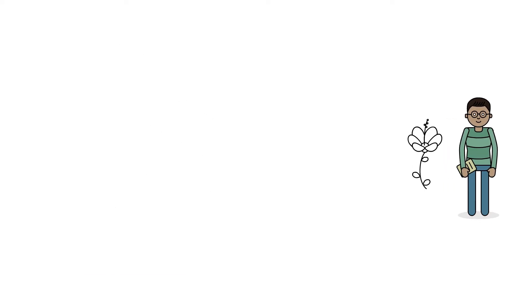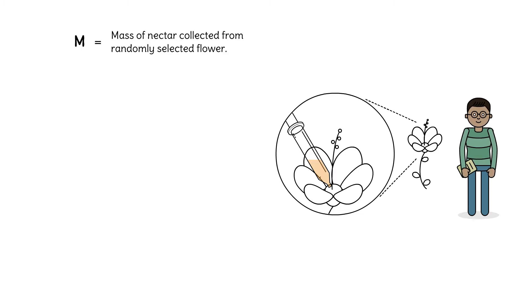The next day, Booker decides to measure the mass of the nectar in the flowers he encounters. He collects it with a tiny eyedropper. This is a random variable, too. Let's call it M. M gets us a number for the mass of the nectar in each flower.